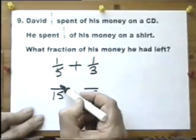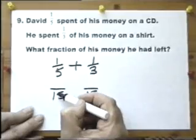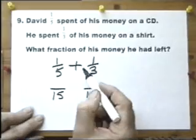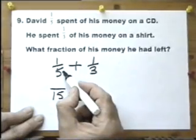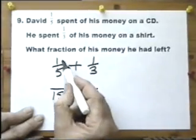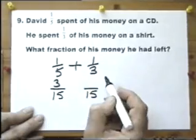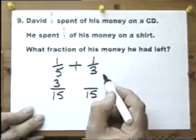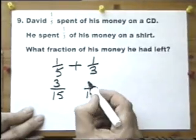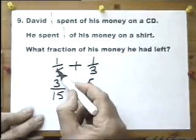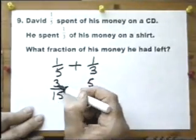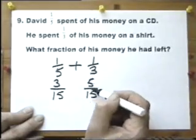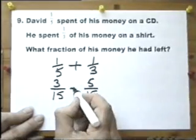So one-fifth is the same as something-fifteenths. One-third is the same as something-fifteenths. Look at the bottom number. Three-fives are fifteen. Look at the top number. Three-ones are three. Look at the bottom number. Five-threes are fifteen. Five-ones are five. One-fifth is the same fraction as three-fifteenths. One-third is the same fraction as five-fifteenths.